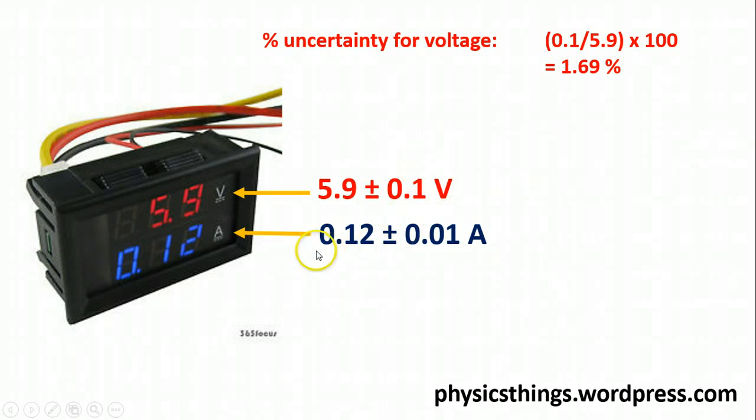Now, if I have a look at the current, I take my absolute uncertainty of plus or minus 0.01, I divide that by my reading of 0.12, and multiply it by 100 to give me 8.33%.